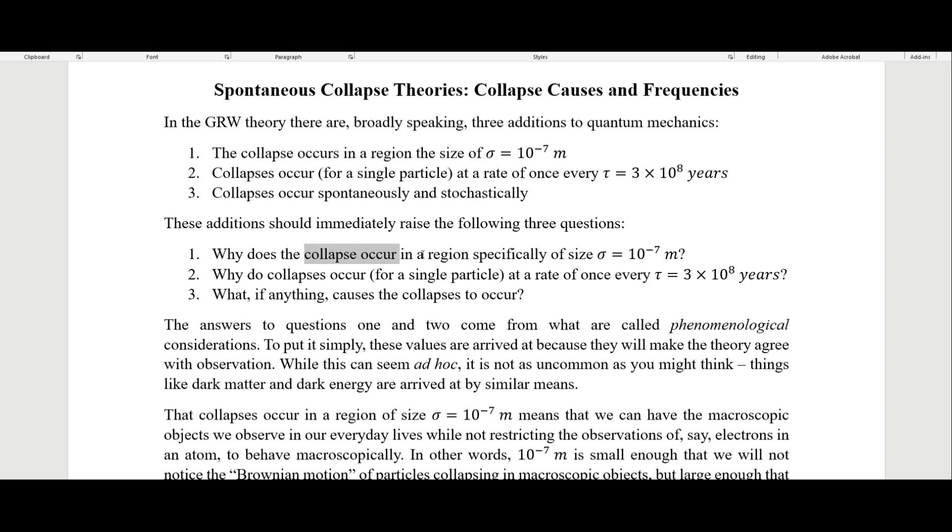These additions probably immediately raise the following three questions: Why does the collapse occur in a region specifically the size of 10^-7 meters? Why do collapses occur for a single particle at a rate of once every 300 million years? And what, if anything, causes the collapse to occur?